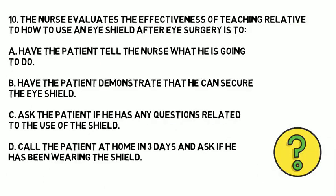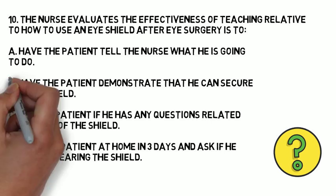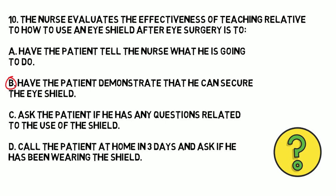Question 10. The nurse evaluates the effectiveness of teaching relative to how to use an eye shield after eye surgery by: A) Having the patient tell the nurse what he is going to do. B) Having the patient demonstrate that he can secure the eye shield. C) Asking the patient if he has any questions related to the use of the eye shield. D) Calling the patient at home in three days and asking if he has been wearing the eye shield. The correct answer is B — have the patient demonstrate that he can secure the eye shield. The best way to see the effectiveness of teaching is to have the patient do a return demonstration. When the patient does a return demonstration, you can see what they're doing wrong and what they're doing right, and if they're doing something wrong, you can teach them the correct way so they can do it themselves at a later time.